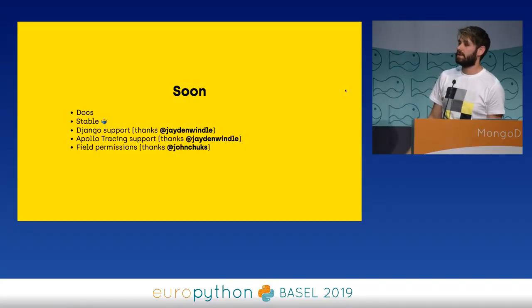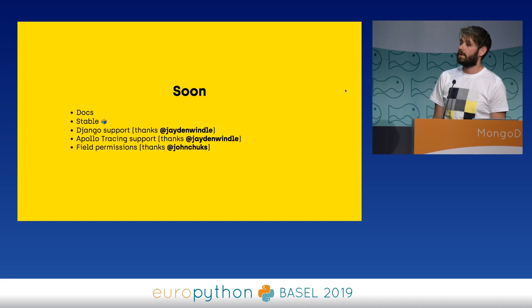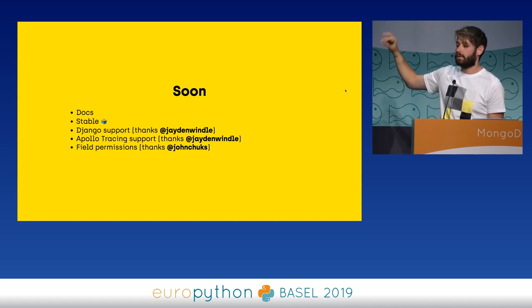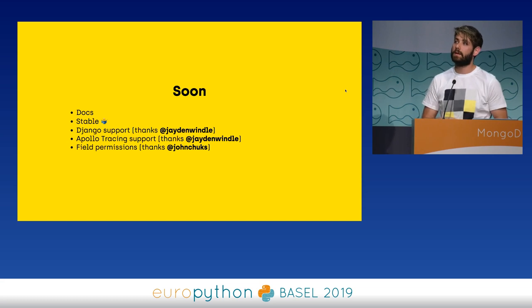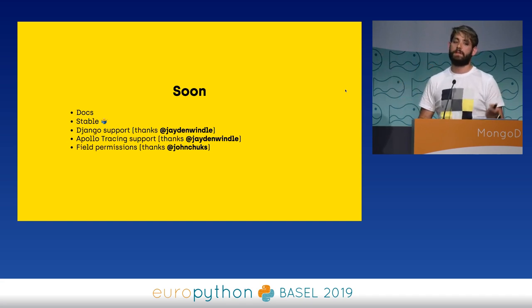We want to have Django support — a friend of mine is working on that, hopefully ready in less than a month. Then Apollo tracing, which is a way to do metrics analysis on GraphQL APIs — for each resolver you can track how much time a field took to load. And field-level permissions, which will work similarly to Django REST framework, where you can specify a list of permission classes on each individual field. So you can say, for example, I only want to show the email field if the user is the current user or an admin, which is really powerful.